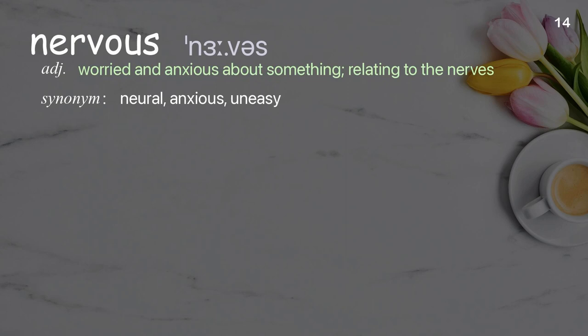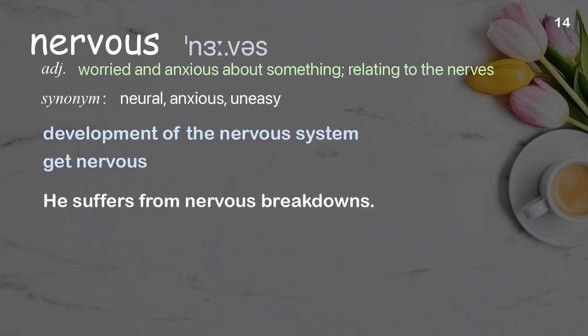Nervous: worried and anxious about something; relating to the nerves. Examples: development of the nervous system; get nervous. He suffers from nervous breakdowns.